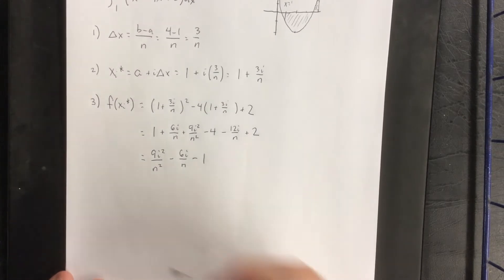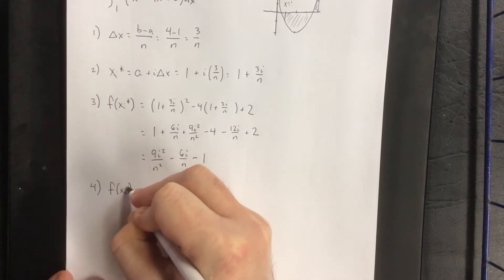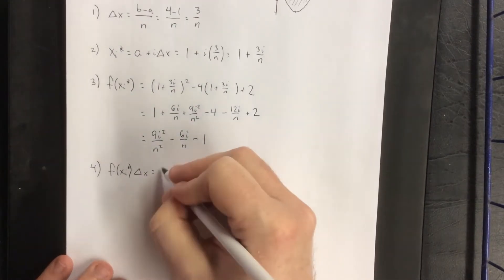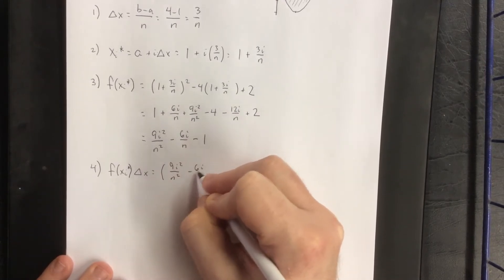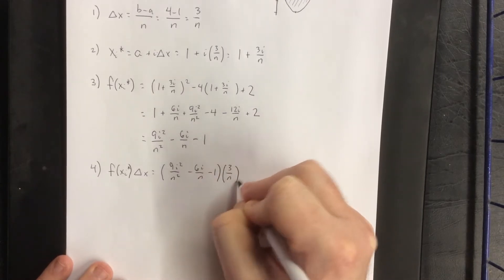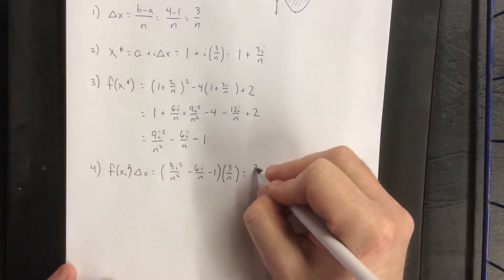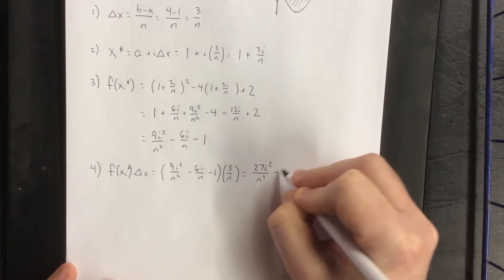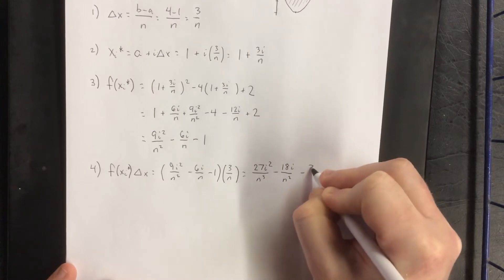I am going to multiply this quantity by delta x. That'll give me f of x sub i star times delta x. So the expression we just got times delta x. Distributing the 3 over n to all three of these terms, this will be 27i squared over n cubed minus 18i over n squared minus 3 over n.